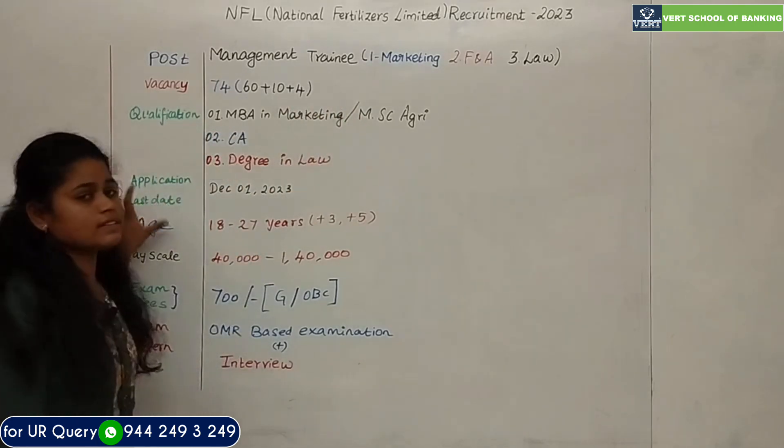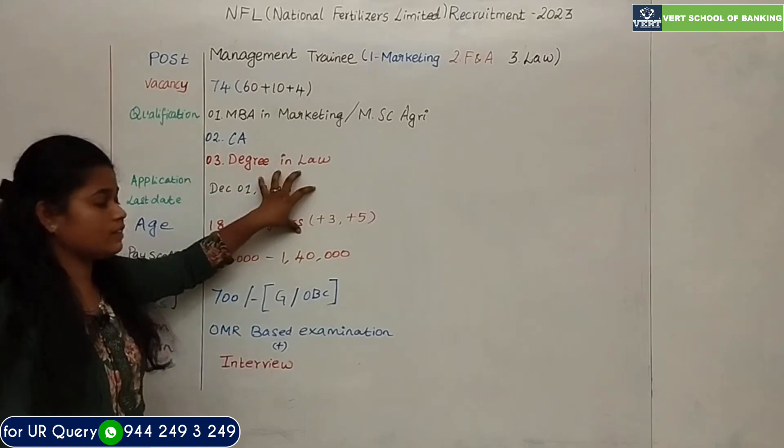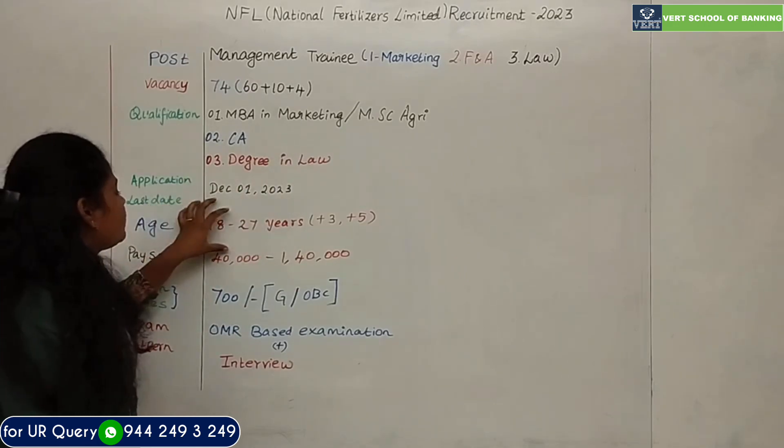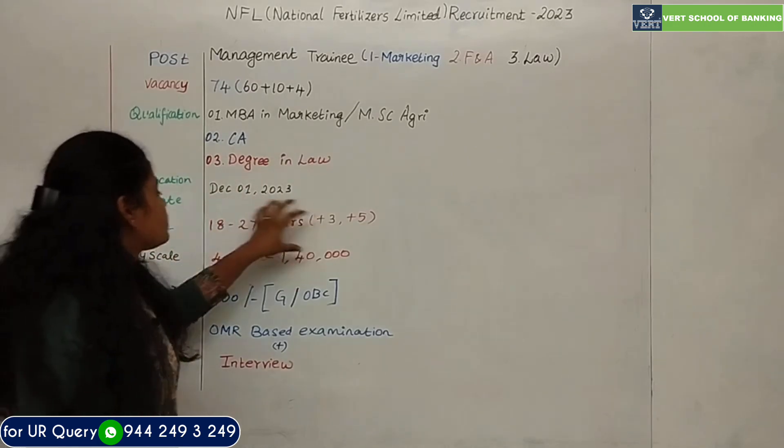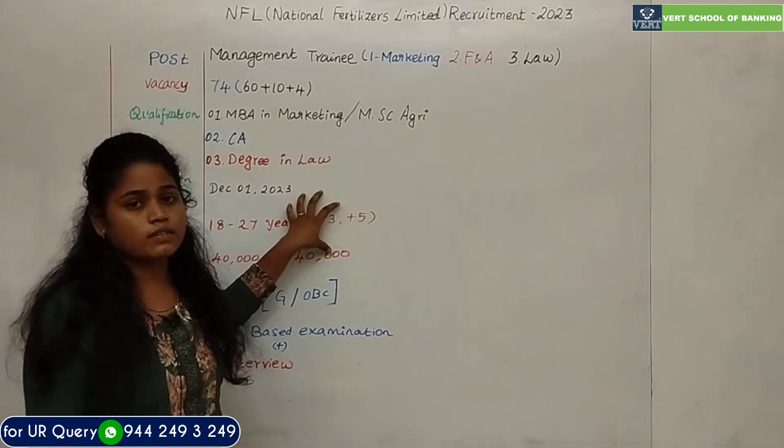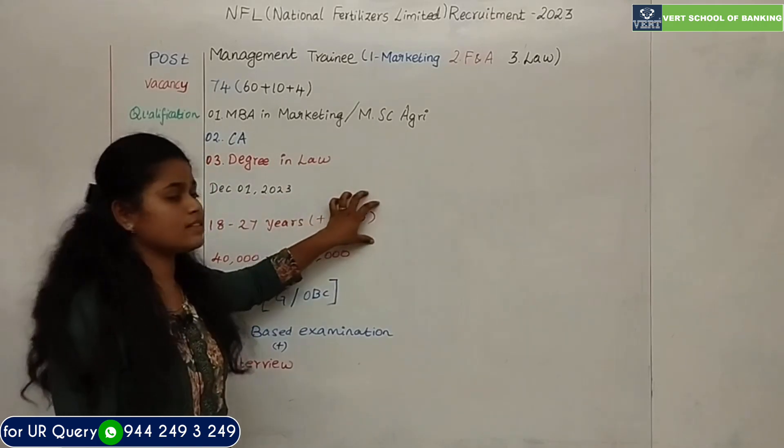Last date is December 1, 2023. Age requirement is 18 to 27 years. Age relaxation: OBC up to 3 years, SC/ST up to 5 years.